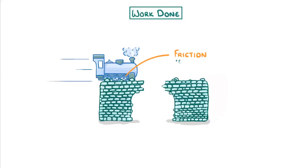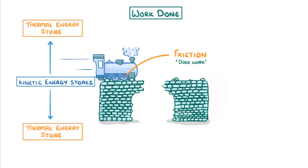We say that the friction does work as it slows the train down, because it causes energy in the wheels' kinetic energy stores to be transferred to the thermal energy stores of the surroundings in the form of heat. Which will hopefully slow down the train.